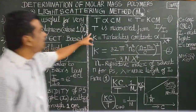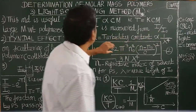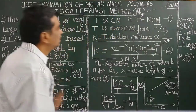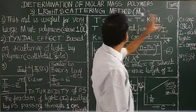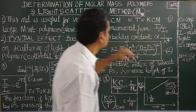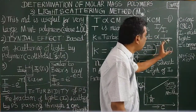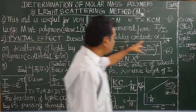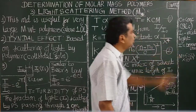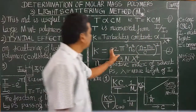K is called the turbidity constant or optical constant. It is inversely proportional to λ⁴ — the fourth power of the wavelength of the incident light. This is similar to Rayleigh scattering, which is also inversely proportional to the fourth power of the wavelength of incident light.